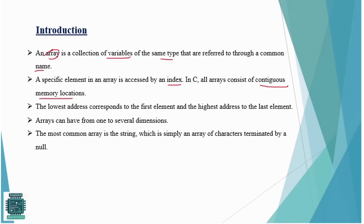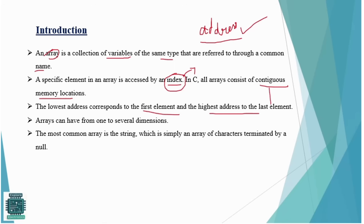Before we go further, you have to understand the difference between index and address. Index is nothing but a position or a number within a data structure or an array. It is used to identify an element — the index specifies the position of an element in an array. Address, on the other hand, is the actual physical memory location where that element is stored. Index is only a position; address is the actual physical memory location.